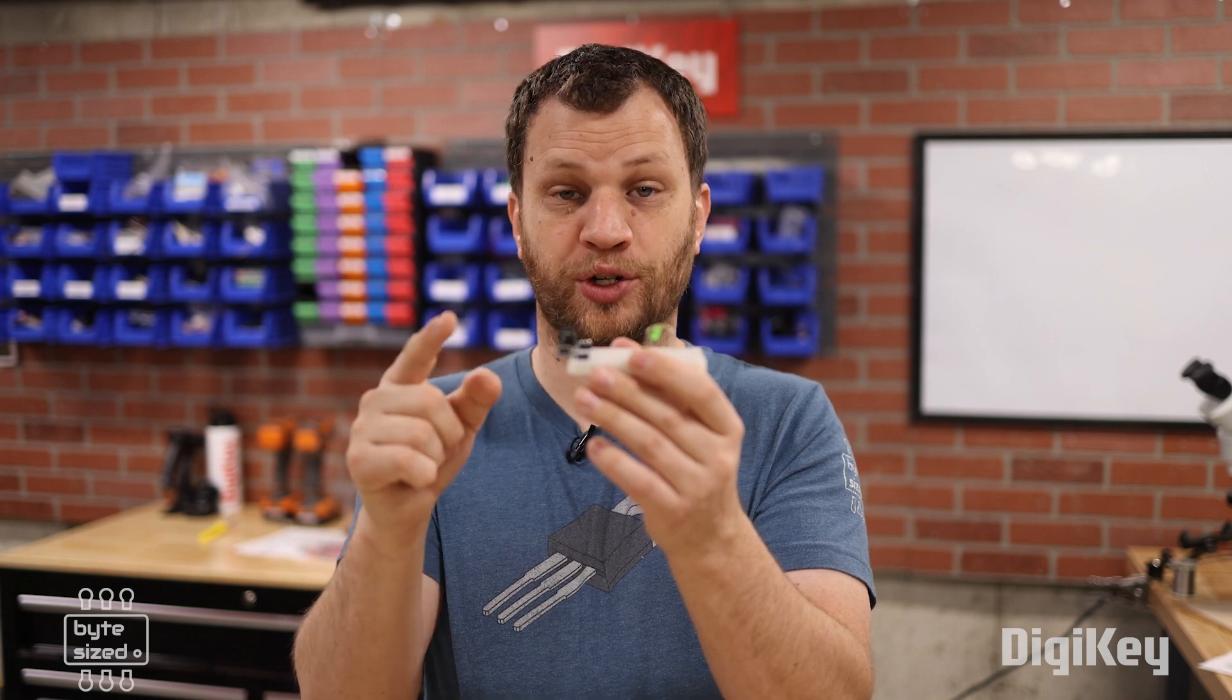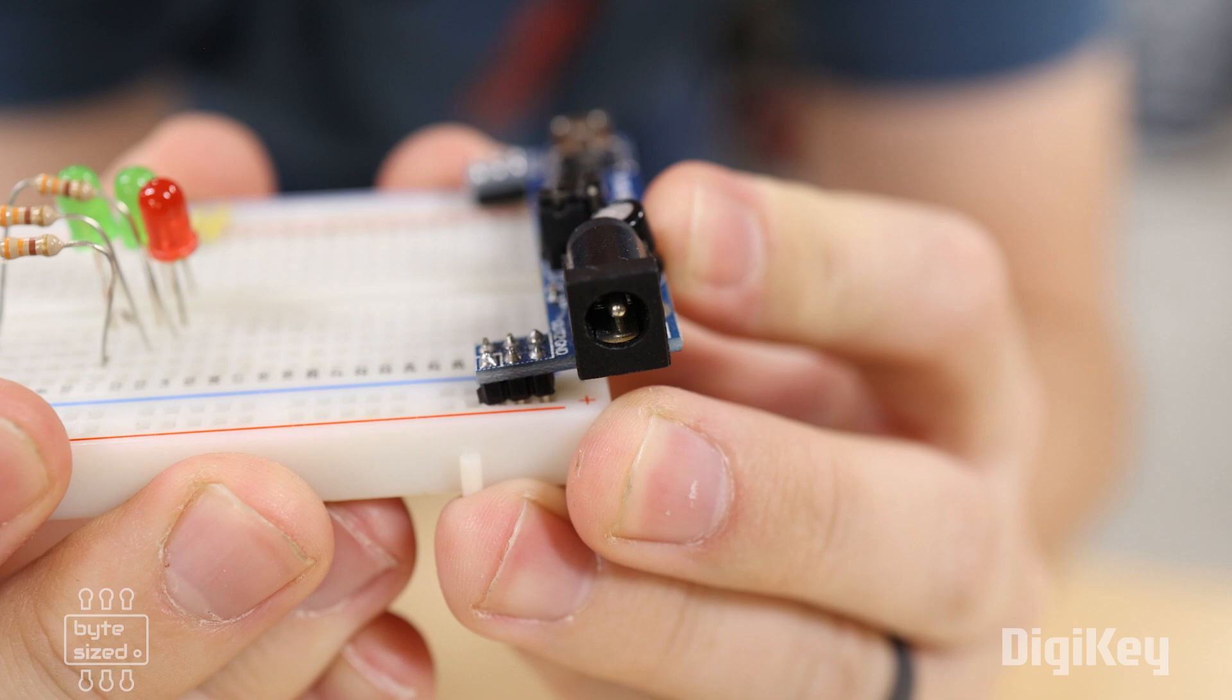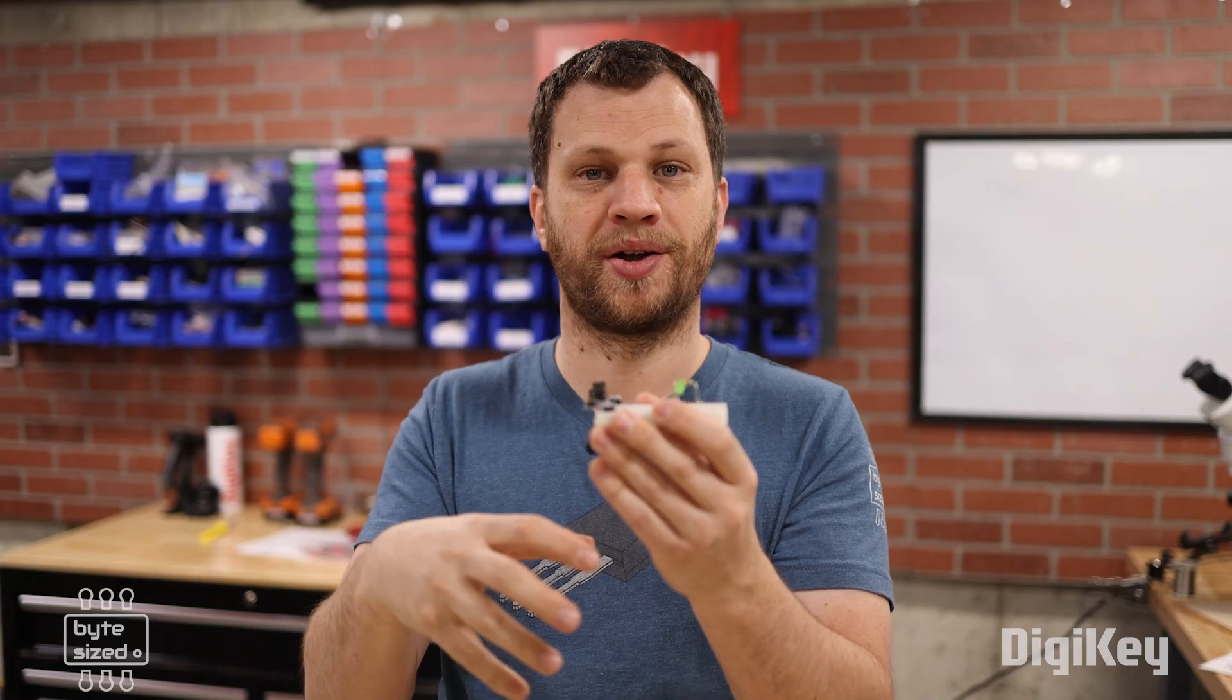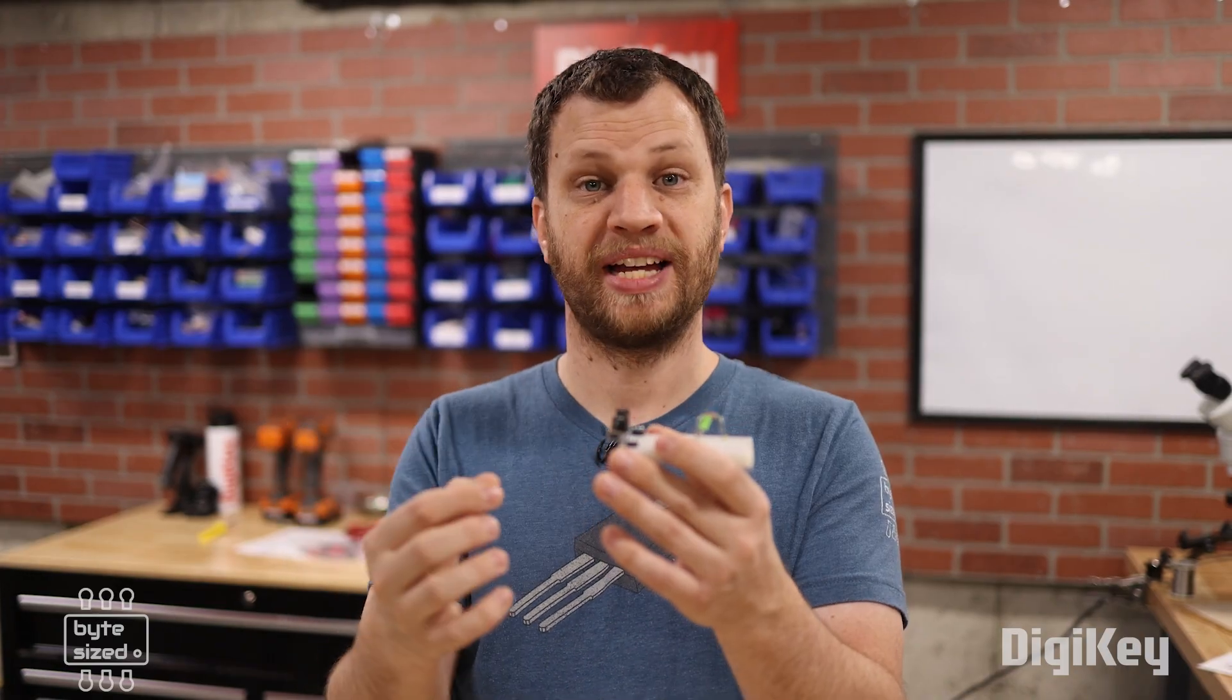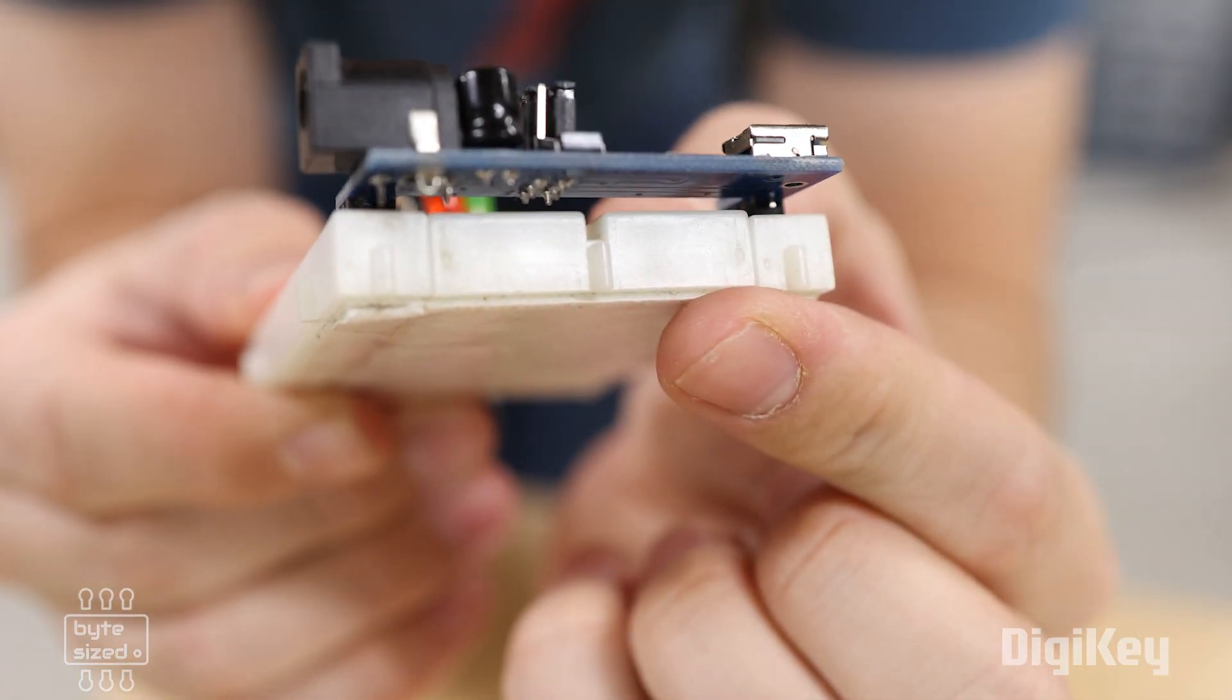The power supply is cantilevered over the edge of the breadboard. So in my experience, when I've gone to plug things in, that power supply sort of wiggles around and sometimes it can come loose. My plan to fix this problem is to 3D print a little base plate that provides more support for the PCB.